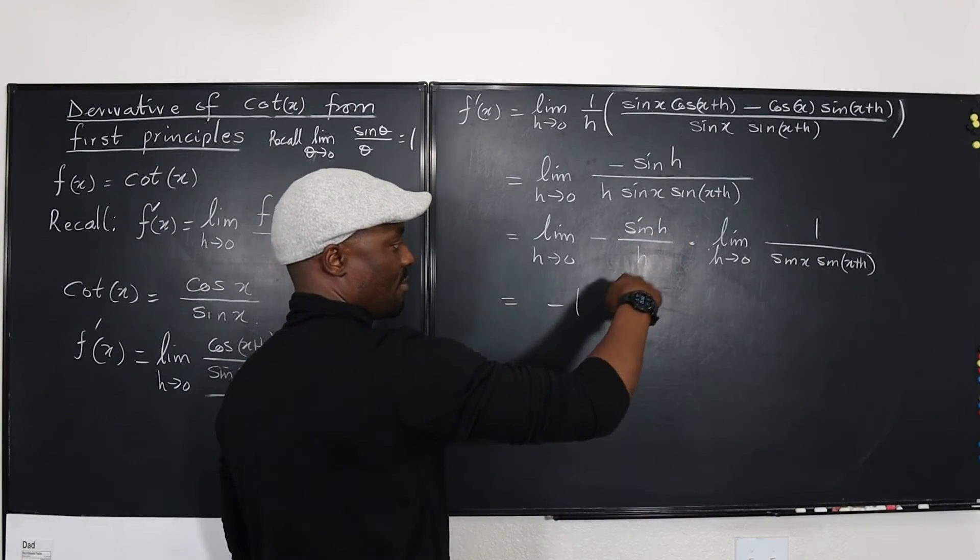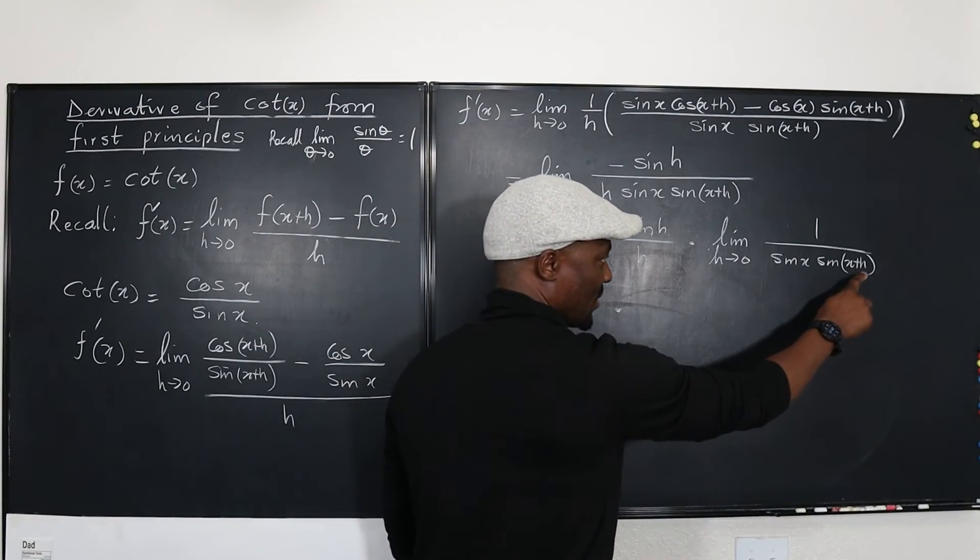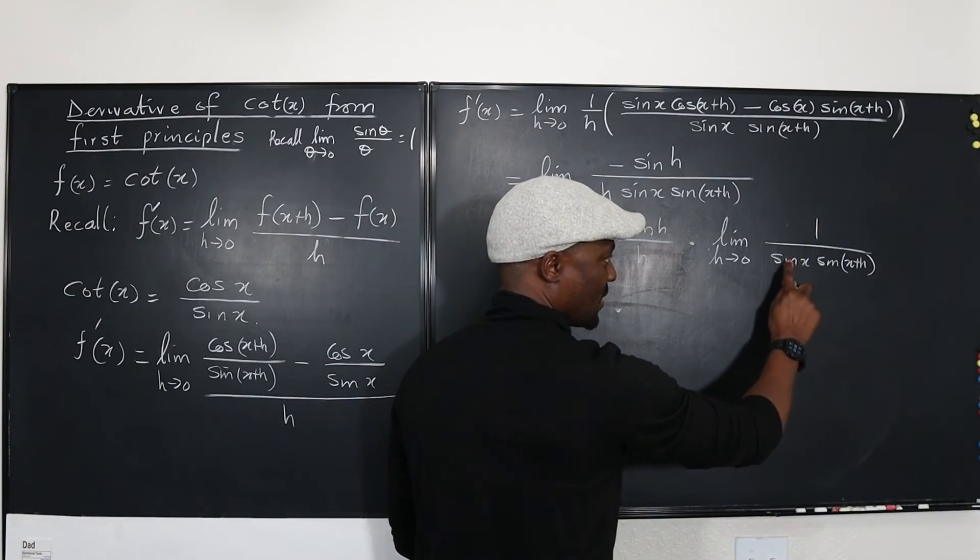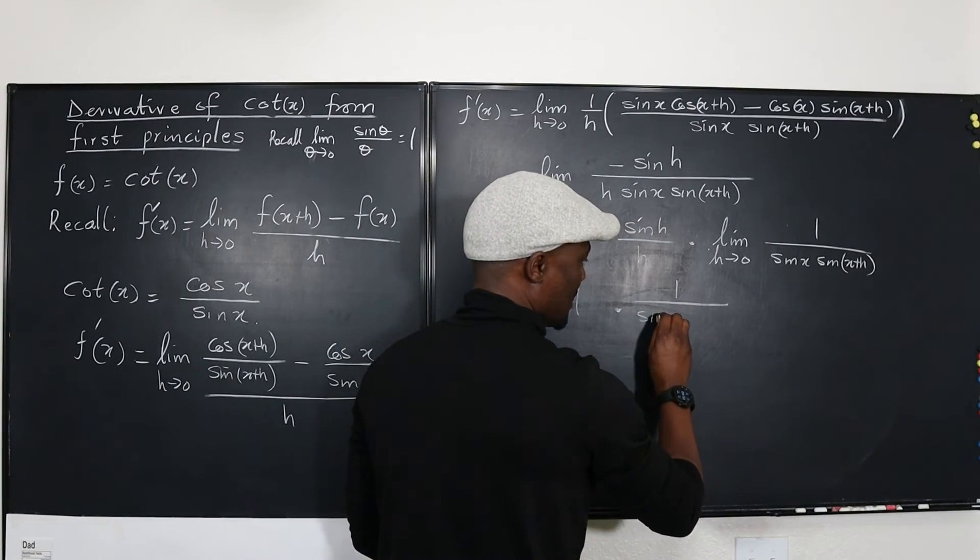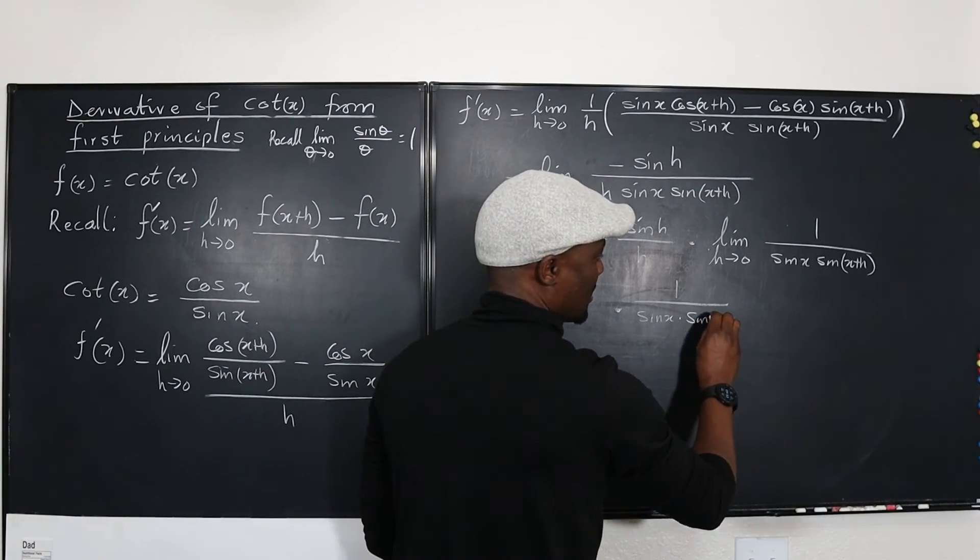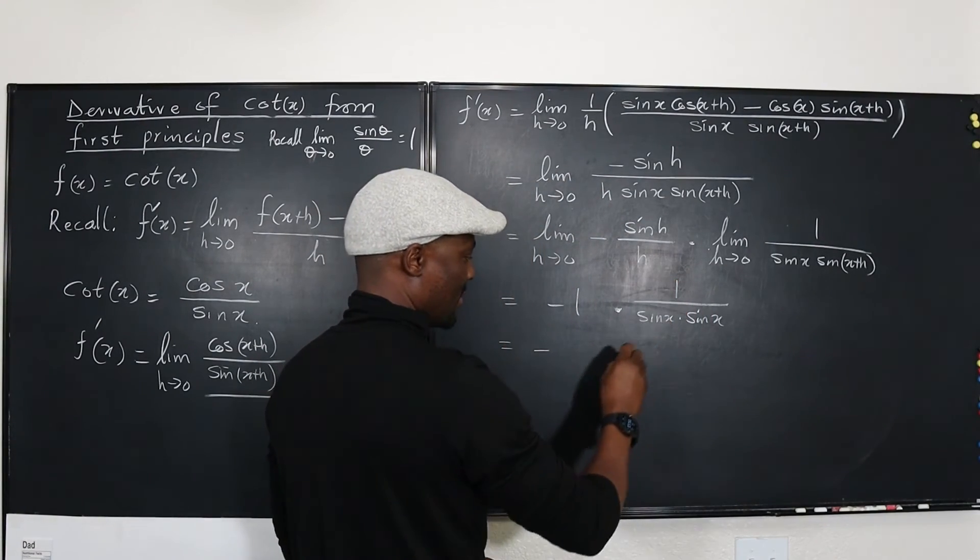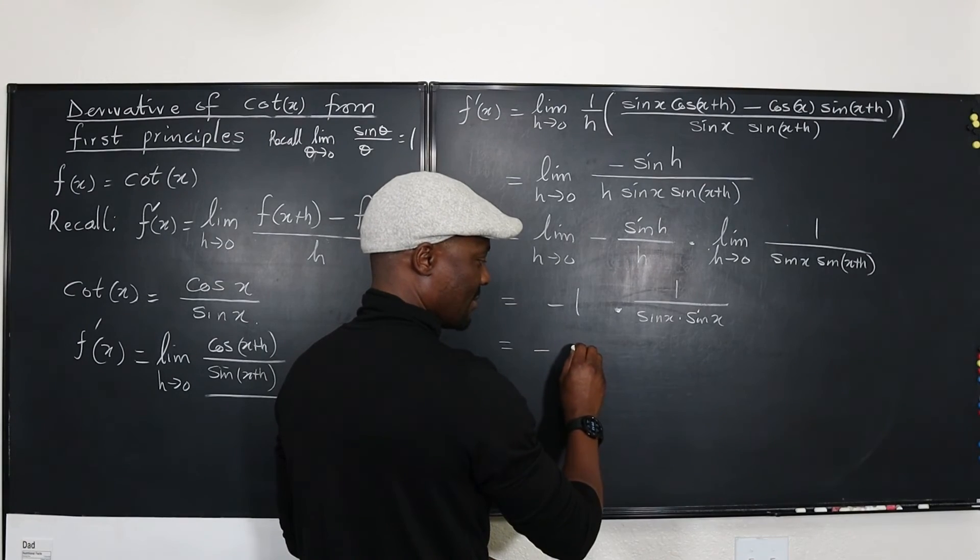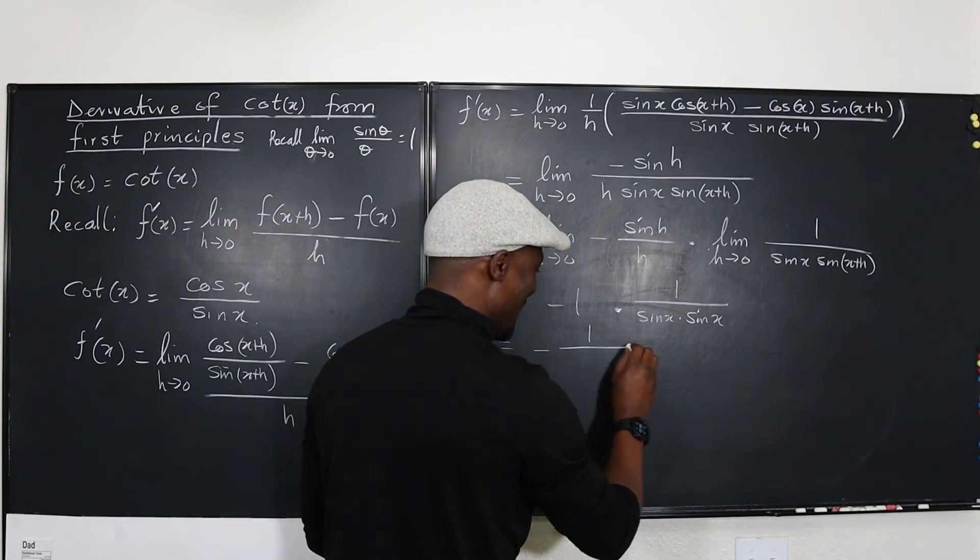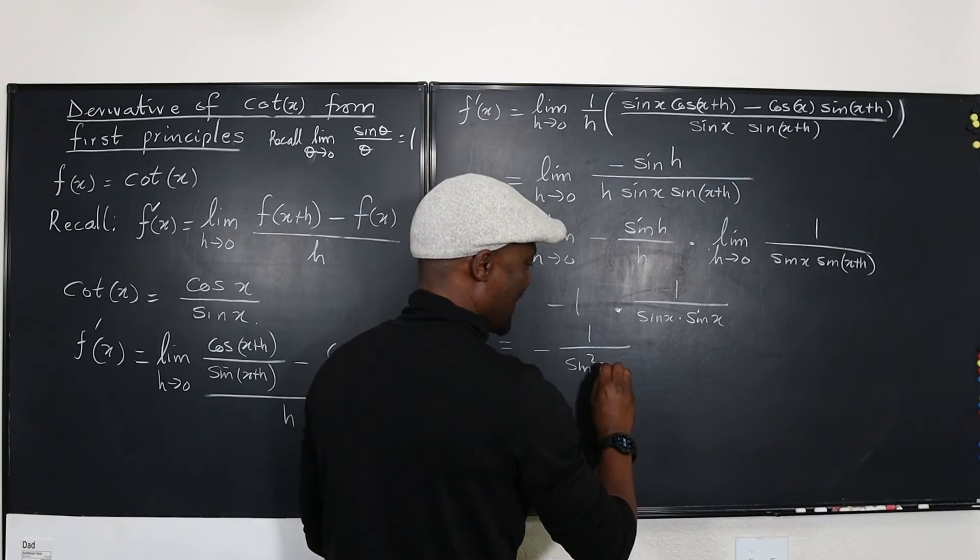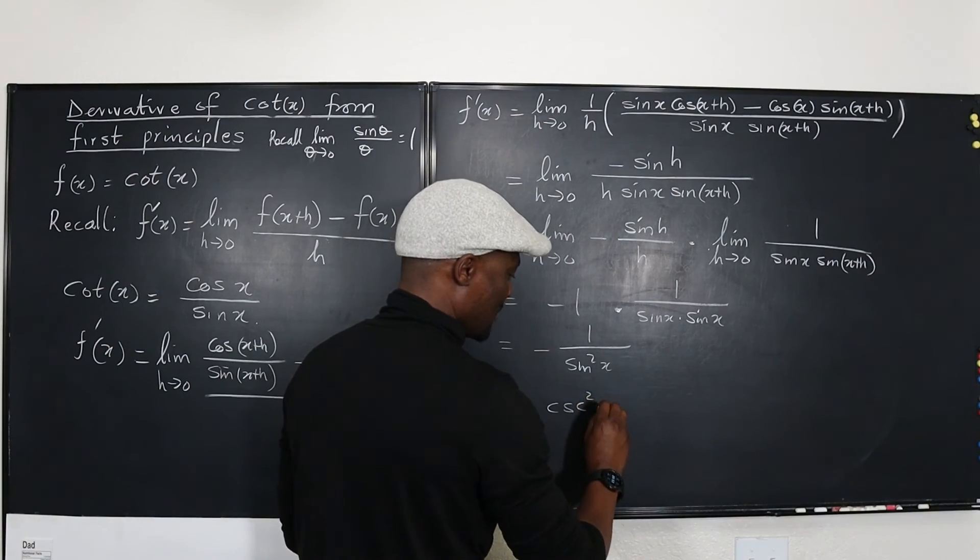So, well, as h goes to zero, this is going to go to zero. So, it's one over sine x times sine x. So, that's one over sine x times sine x. And what does that tell you? It's negative. Remember one over sine? So, it's negative one over sine squared x, which is equal to negative cosecant squared x.